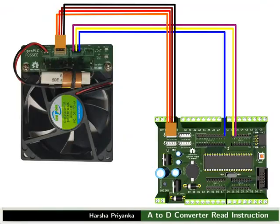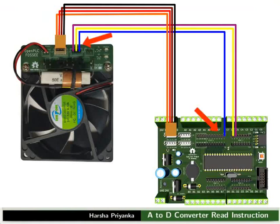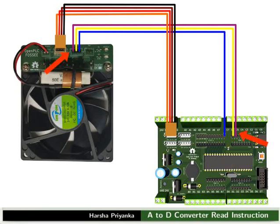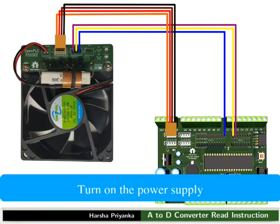Let us see the connection details now. Power the heater module through Relimate connectors from the mainboard. Connect pin PA7 of the mainboard to temp MCU pin of the heater module. Connect pin PC7 of the mainboard to heat MCU pin of the heater module. Connect pin PC6 of the mainboard to fan MCU pin of the heater module. Make the connections as shown in the picture. After making all the connections properly, turn on the power supply.